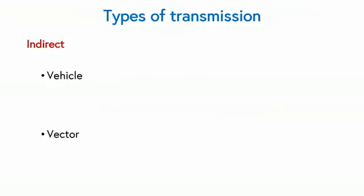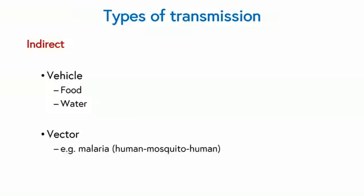Infections can also transmit indirectly. This can involve a vehicle such as food, as we see with food poisoning — salmonella or campylobacter — or through water as we see with cholera or hepatitis A. And sometimes they'll involve a vector. An example would be malaria, where the life cycle goes from the human to the mosquito to the human, and the mosquito is the vector responsible for transmitting the parasite onto the human.